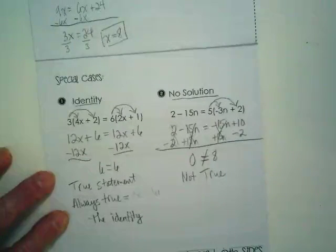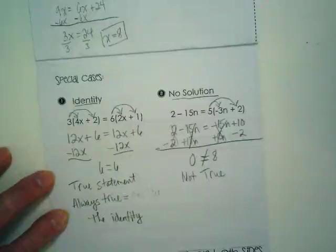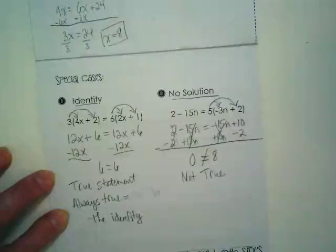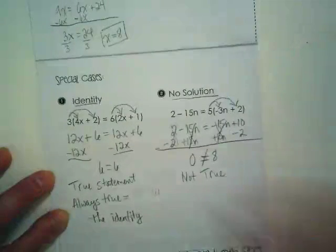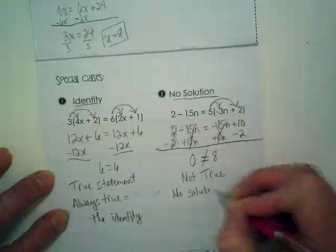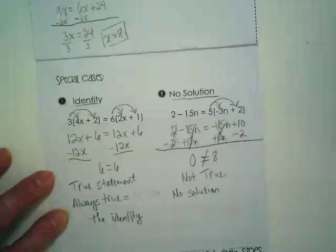So when you end up with an equation that you have brought it down to the last things that are there and it doesn't equal each other, either you've made a mistake or there's no solution. There is no number I could put in for that n that would make this equation equal. Does that make sense?